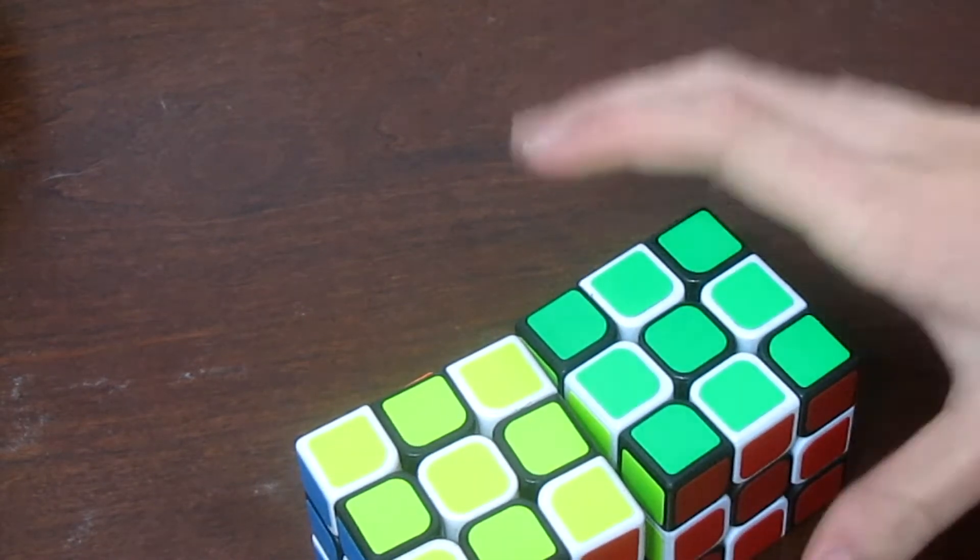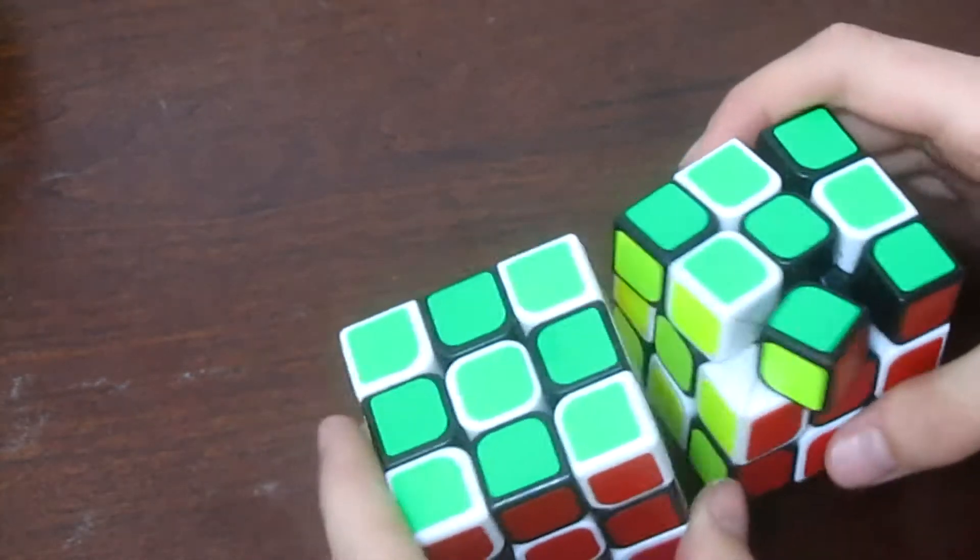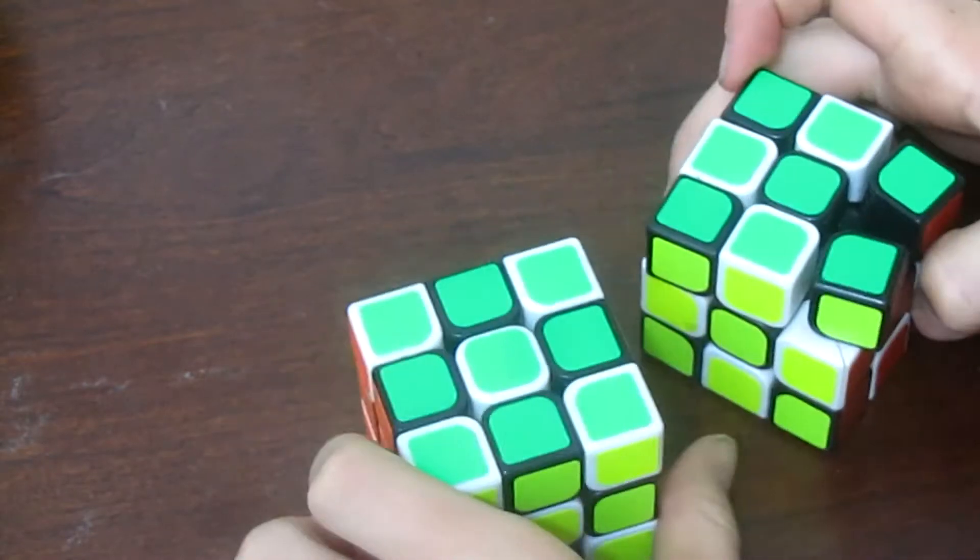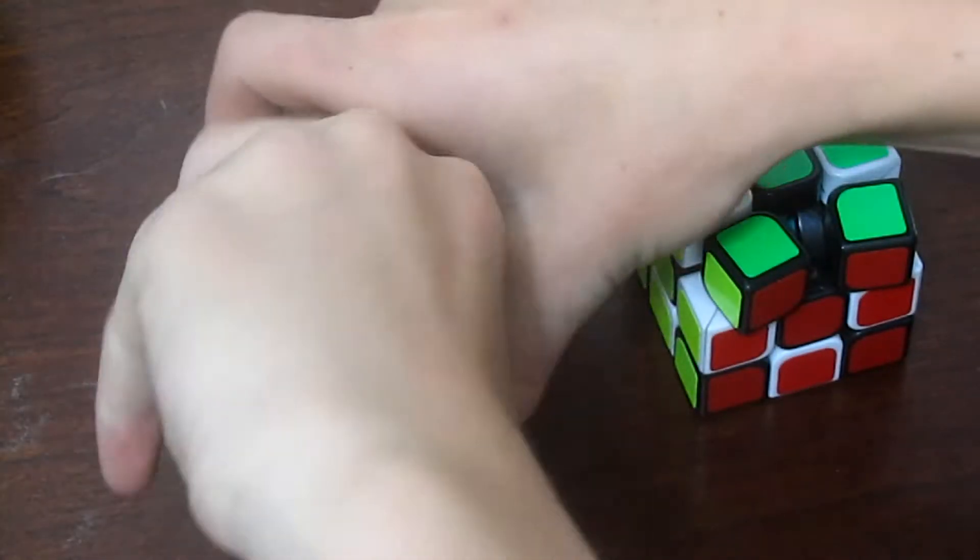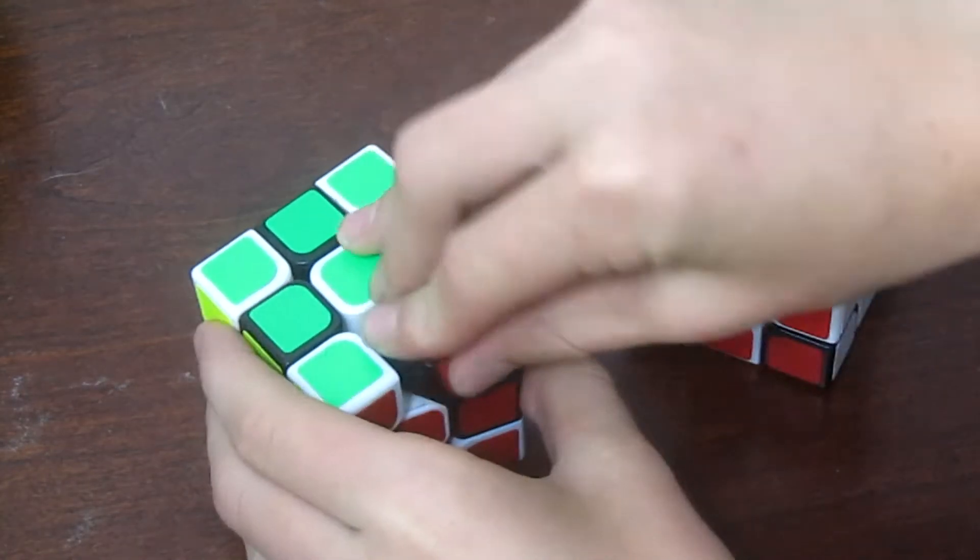So I would hold the cubes in the same orientation. This was green on top, white on the right, red on the front, yellow on the left. And basically I would pop out the center, one of the edges, take it out, put it in the other one.